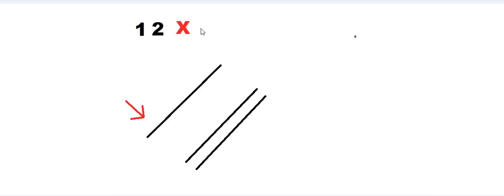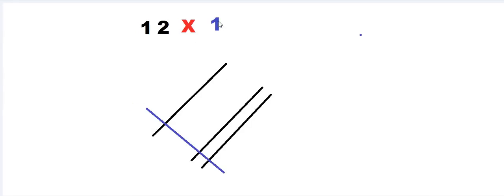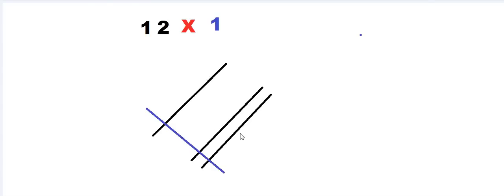After that, we start drawing in the opposite orientation for the second number. The next number is one, so we draw one line in this orientation. After that, the next number is three, so after leaving some space, we draw three lines in this orientation.